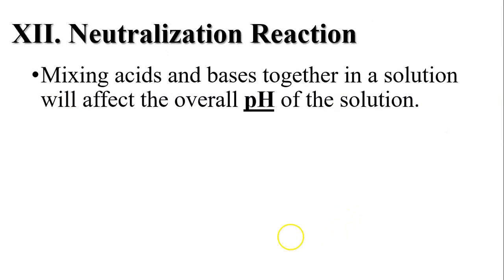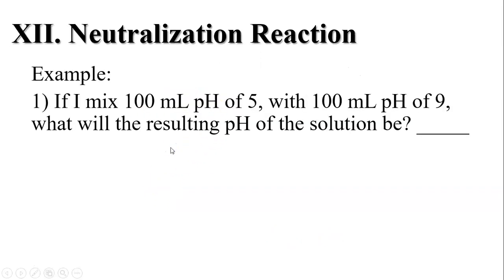A neutralization reaction is when we mix together an acid and a base, and it affects the overall pH of the solution. For example, if I mix 100 mL of something with a pH of 5 and 100 mL of something with a pH of 9, those will come closer to the middle — toward 7 — so the resulting pH should be close to 7.